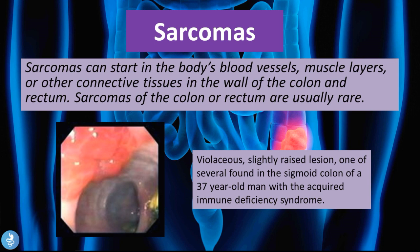Sarcomas can start in blood vessels, muscle layers, or other connective tissues in the wall of the colon and rectum, but are usually very rare. The picture shows a violaceous, slightly raised lesion in the sigmoid colon of a 37-year-old man with AIDS. Sarcomas are more common in immunosuppressed patients, such as those with AIDS or undergoing chemotherapy or immunosuppressant treatment.